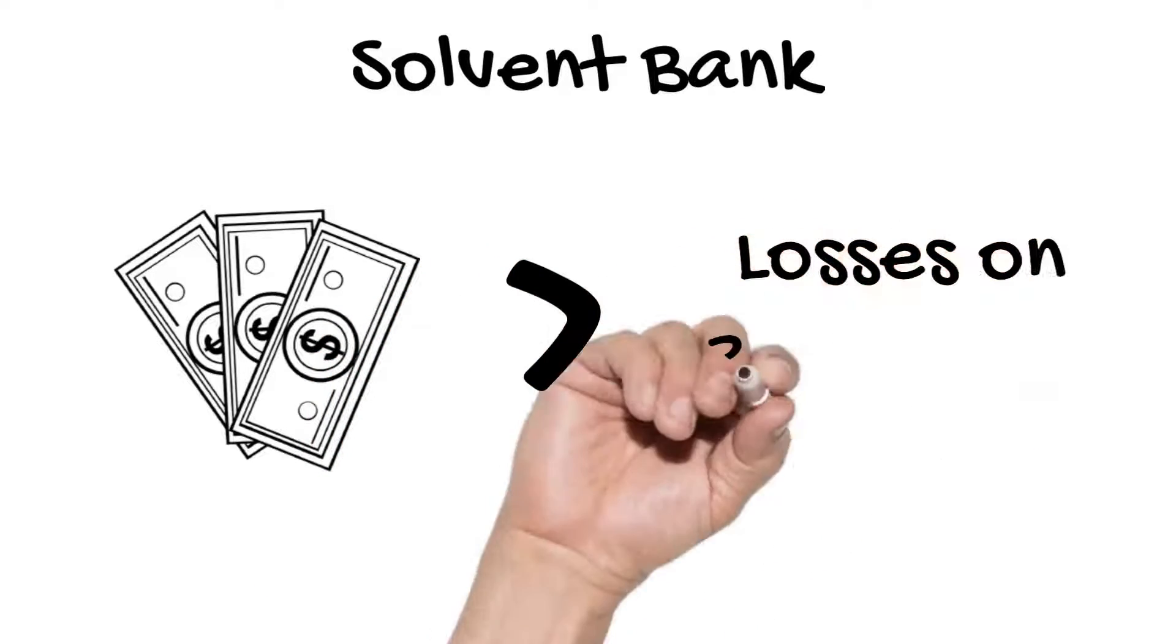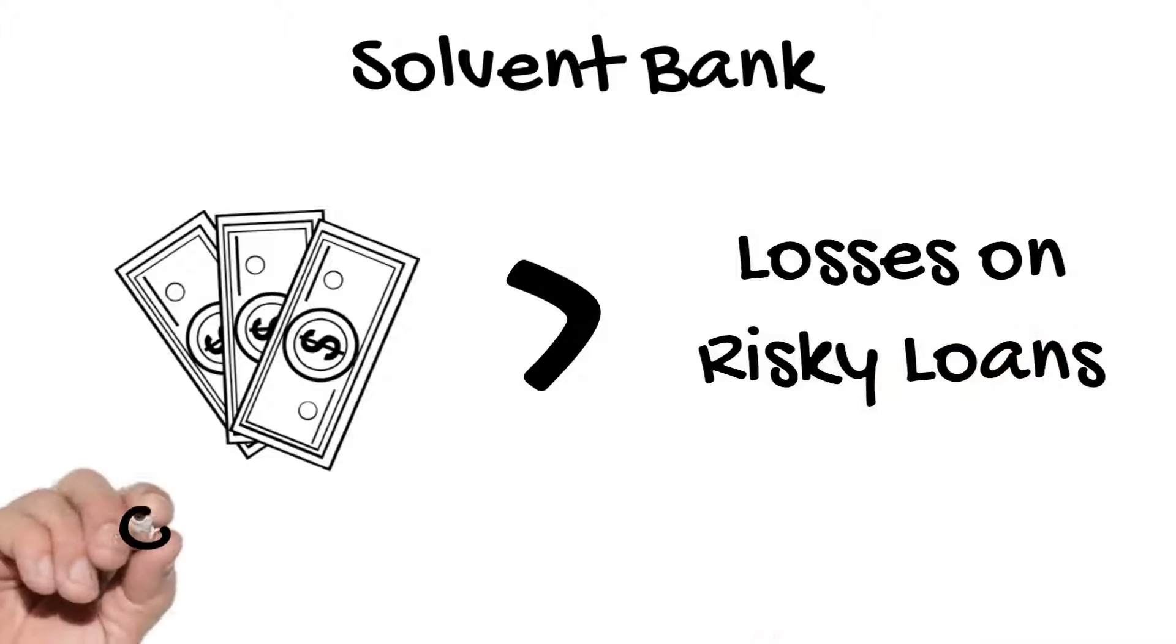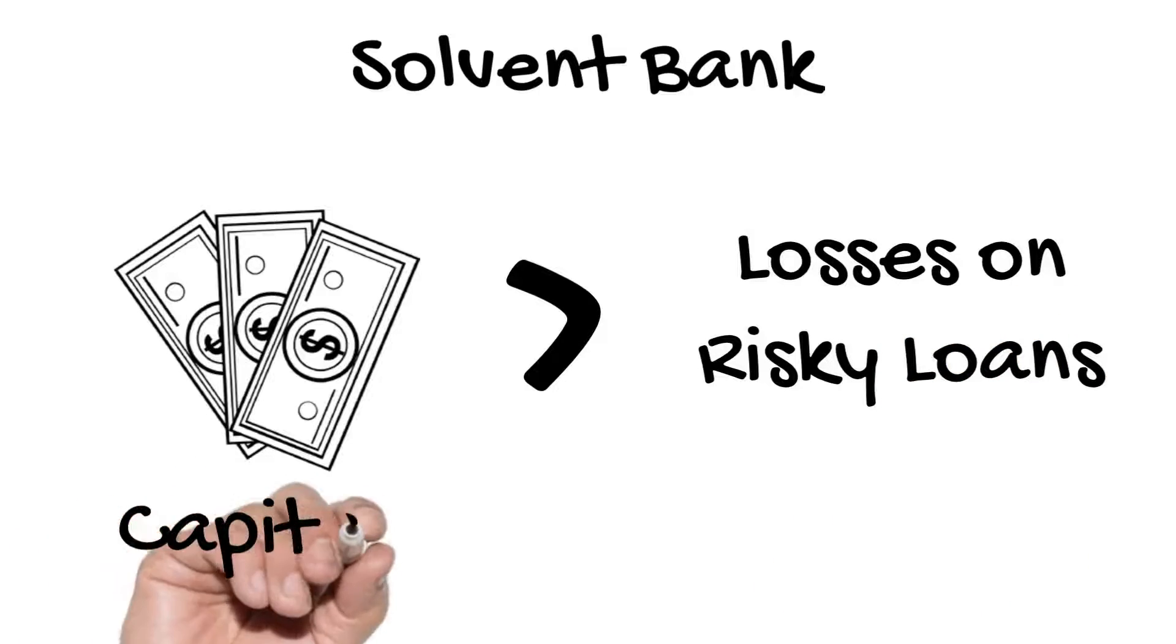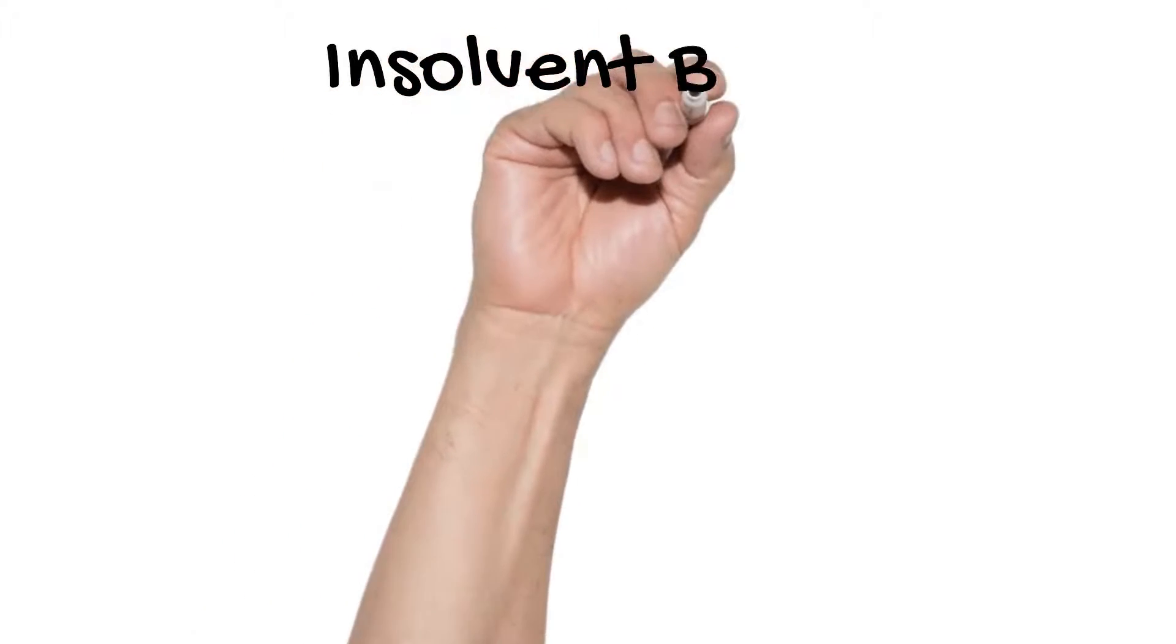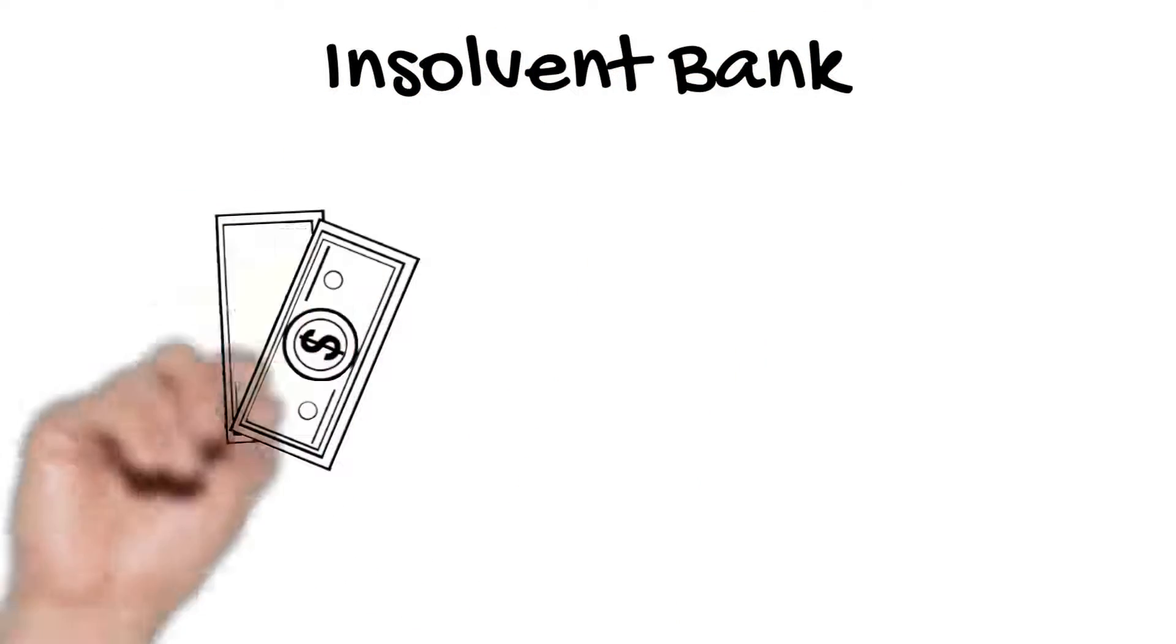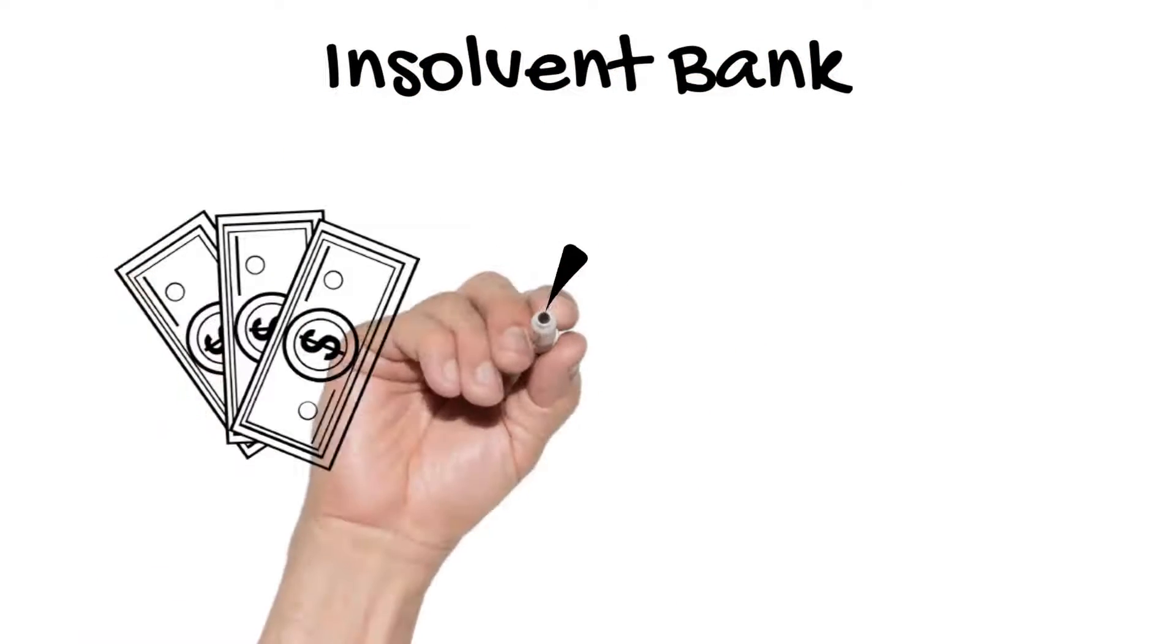This protects a bank's depositors and the money it borrows from investors. A bank is insolvent if its capital is smaller than the unexpected losses it makes on risky loans.